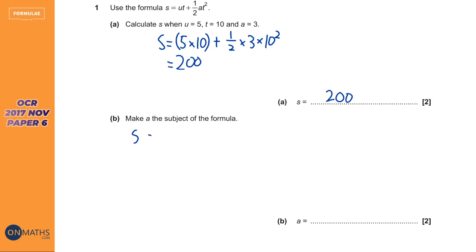Not so easy. But not so difficult either. So I'm going to write out the formula first and get my lines in. So we want to get A the subject of the formula. So the first thing I'm going to do is remove the term that doesn't have an A in on the right-hand side, the UT. So I'm just going to take away UT from both sides.